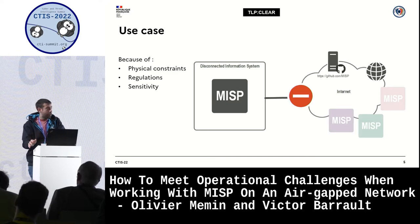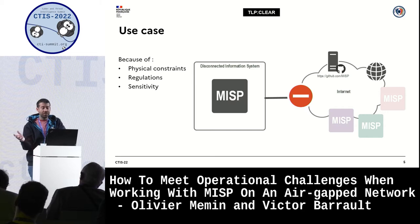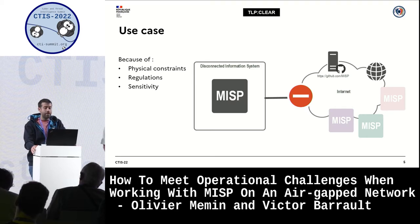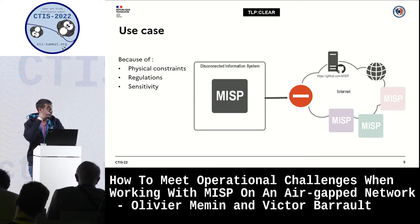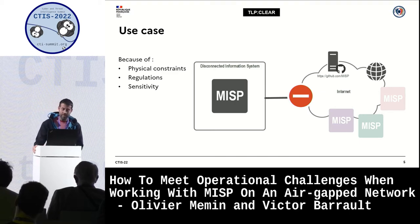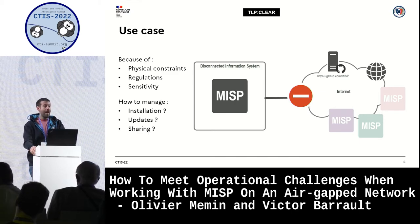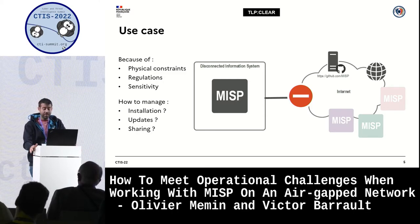First, you want to deploy a MISP instance with sources hosted on GitHub, and your partners and providers having their own MISP instances exposed on the internet, ready and eager to share — to push and pull events — which is the expected behavior by design with MISP. With these considerations, how do you manage installation, updates, and sharing?